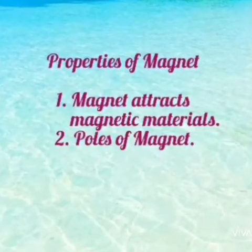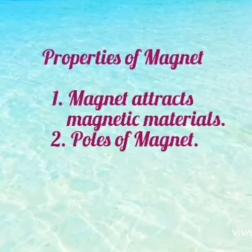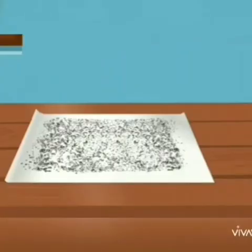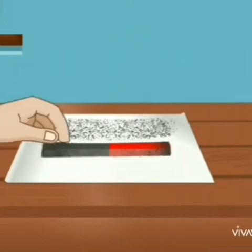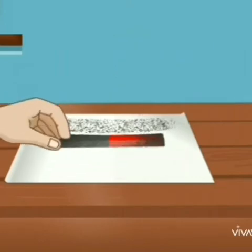Second property of magnet: poles of magnet. Let's do an experiment. Take a white sheet. Spread some iron filings on it. Instead of iron filings, you can take paper pins also. Ek white sheet leke, uske oopar iron fillings ko spread kar dena hai. Iron fillings ke jagah pe, paper pin se bhi ye experiment kar sakte hai. Then take a magnet and place it on the sheet.